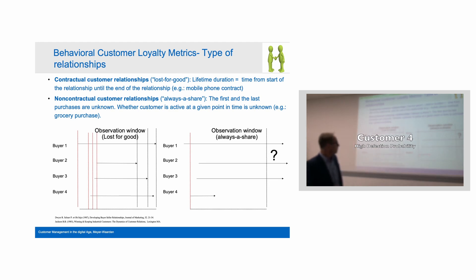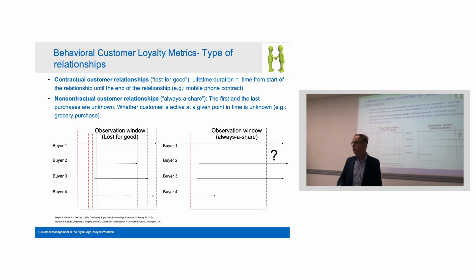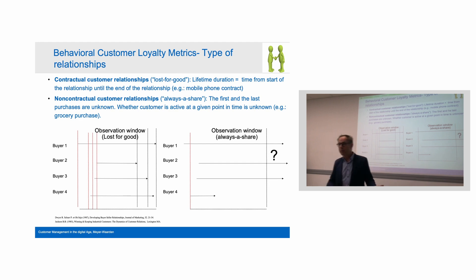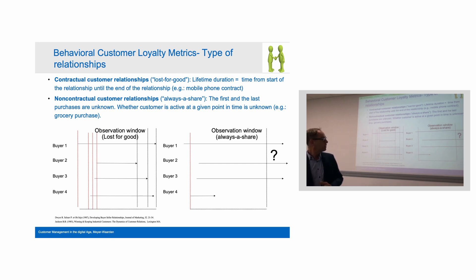Take customer 4: he bought in the beginning, but it's been a while since he last purchased. You don't know what happened — either he defected, or he is simply inactive, buying perhaps at another supermarket, or he has moved to another city, or he has really passed away. We never know, so it is difficult to understand what happens after a certain point in time.